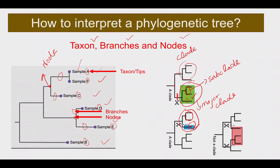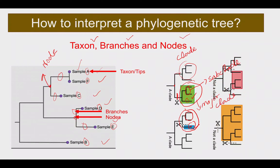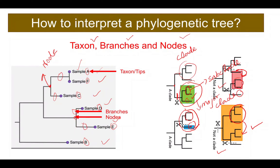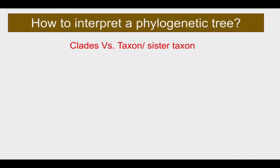What are NOT clades? If a group is part of a larger clade and overlaps with another clade, it is not considered a proper clade. A valid clade must include one ancestor and all of its descendants without overlapping another clade.